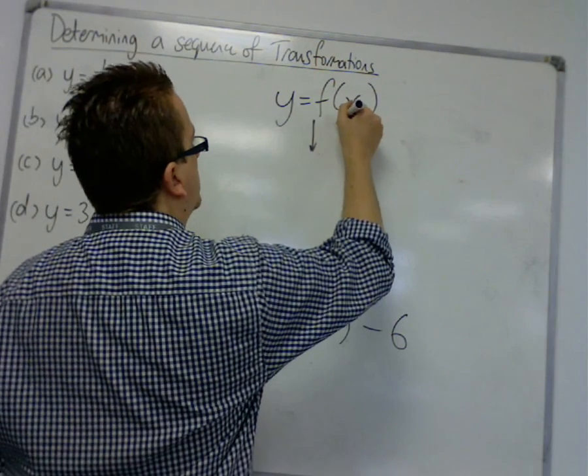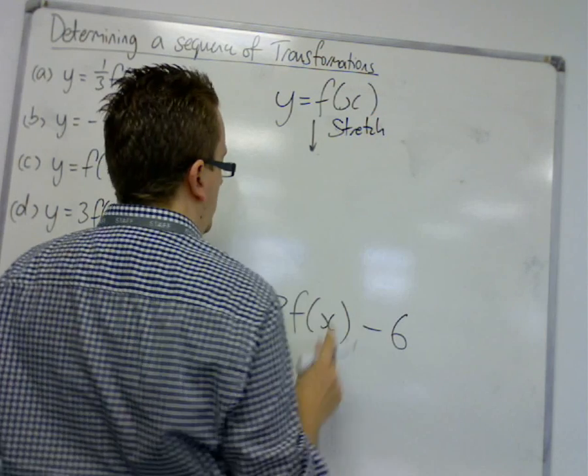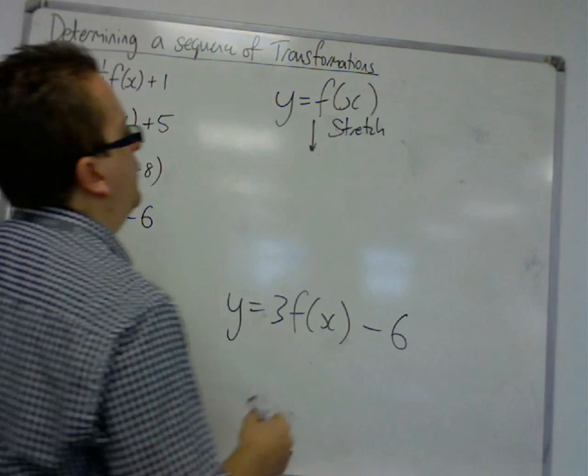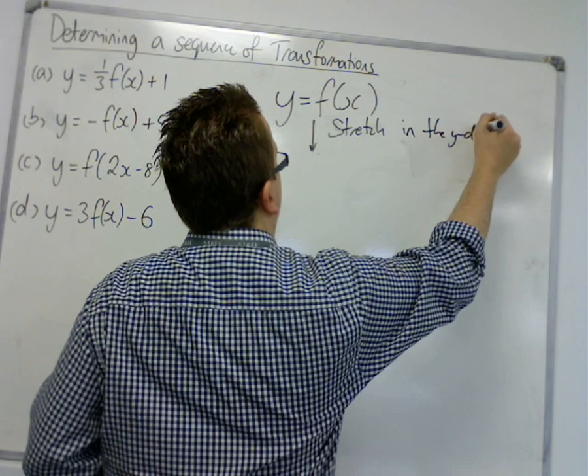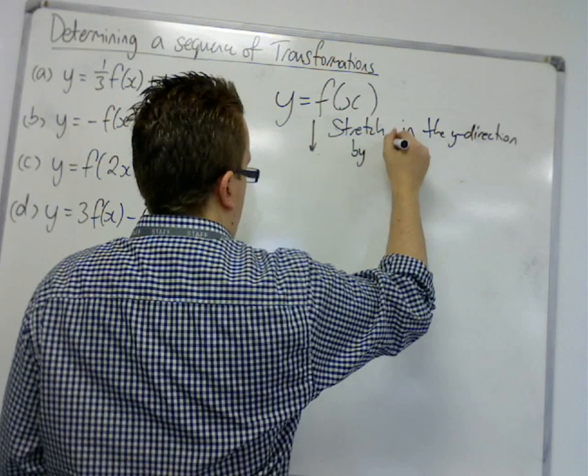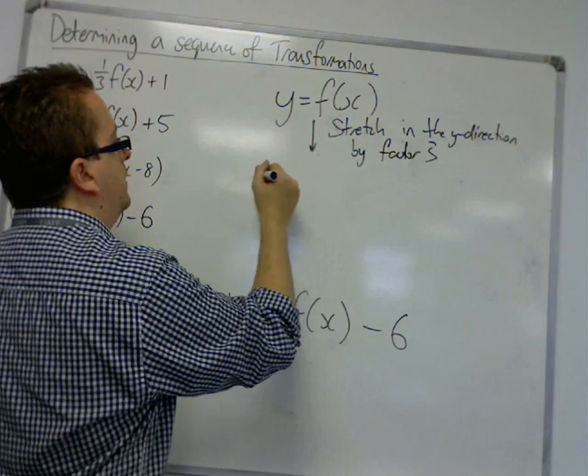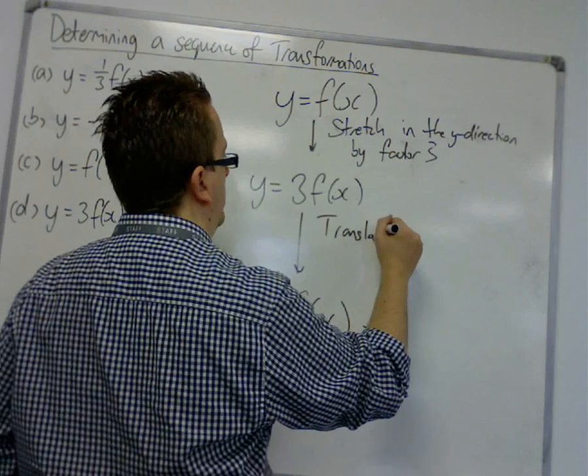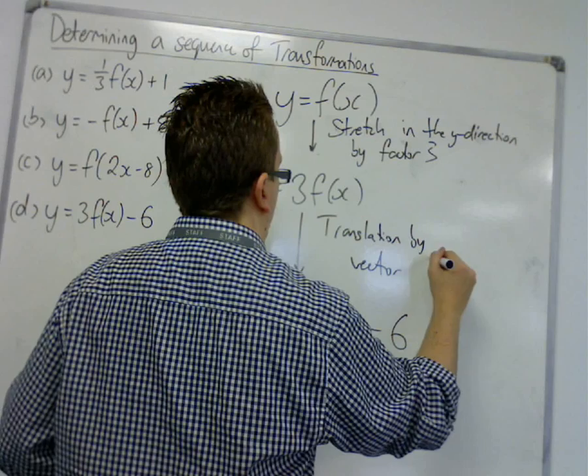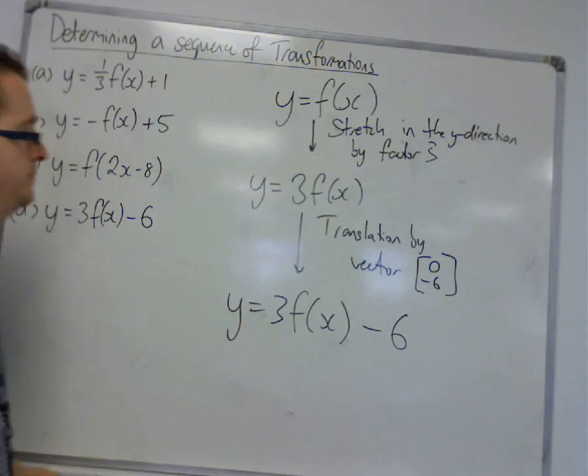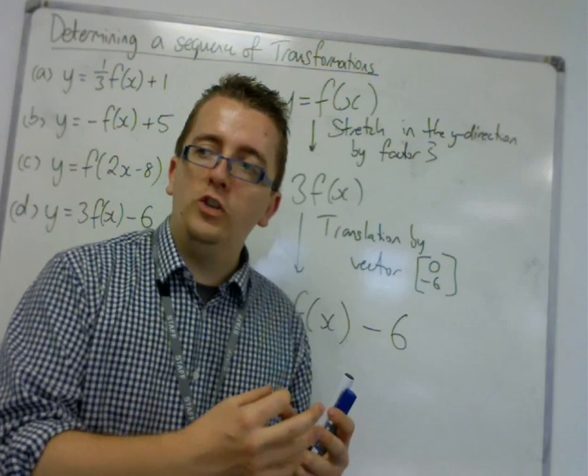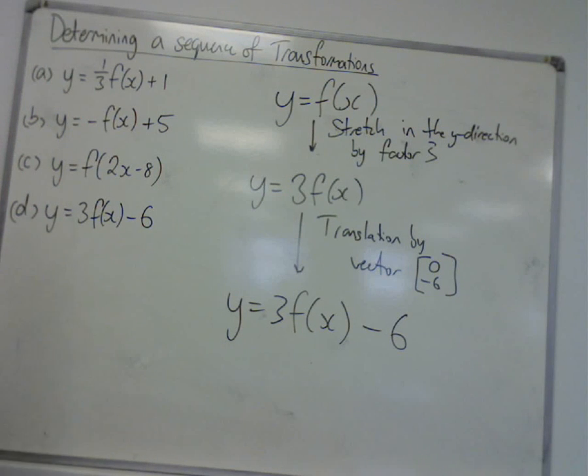Let's do our stretch first. Because I saw that the next stage was going to affect the minus 6 that we already had. So, that's why I backtracked. So, it's a stretch in the y direction by factor 3. So, we get y is equal to 3 lots of f of x. And then I can perform the translation. And there we are. So, that's our four examples. So, it's just about can you spot what transformations are and then can you figure out the order in which they must have occurred.